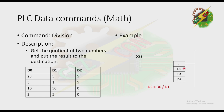From the table: 25 divided by 5 gives 5; 5 divided by 1 gives 5; 10 divided by 50 gives 0; and 2 divided by 5 gives 0. The reason D2 shows 0 here is that those results should be 0.2 and 0.4 respectively, but the decimal is automatically removed when the data type is declared as integer.